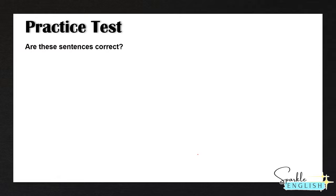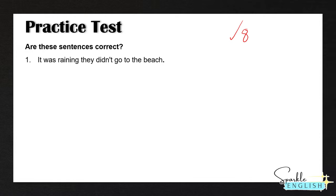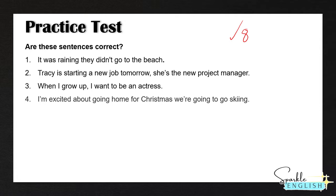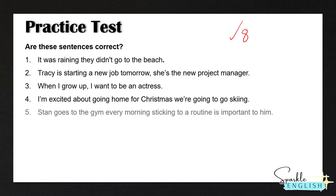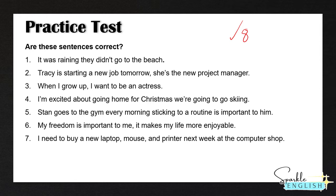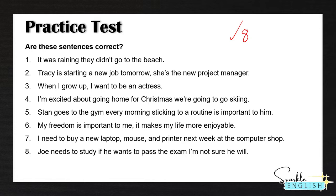Now it's time for you to practice. We're going to do a practice test out of eight. Some of them are correct and some are run-on sentences that you have to correct using any of the four methods we learned. Number one: it was raining, they didn't go to the beach. Number two: Tracy is starting a new job tomorrow, she's the project manager. Number three: when I grow up, I want to be an actress. Number four: I'm excited about going home for Christmas, we're going to go skiing. Number five: Stan goes to the gym every morning, sticking to a routine is important to him. Number six: my freedom is important to me, it makes my life more enjoyable. Number seven: I need to buy a new laptop, mouse and printer next week at the computer shop. Number eight: Joe needs to study if he wants to pass the exam, I'm not sure he will.